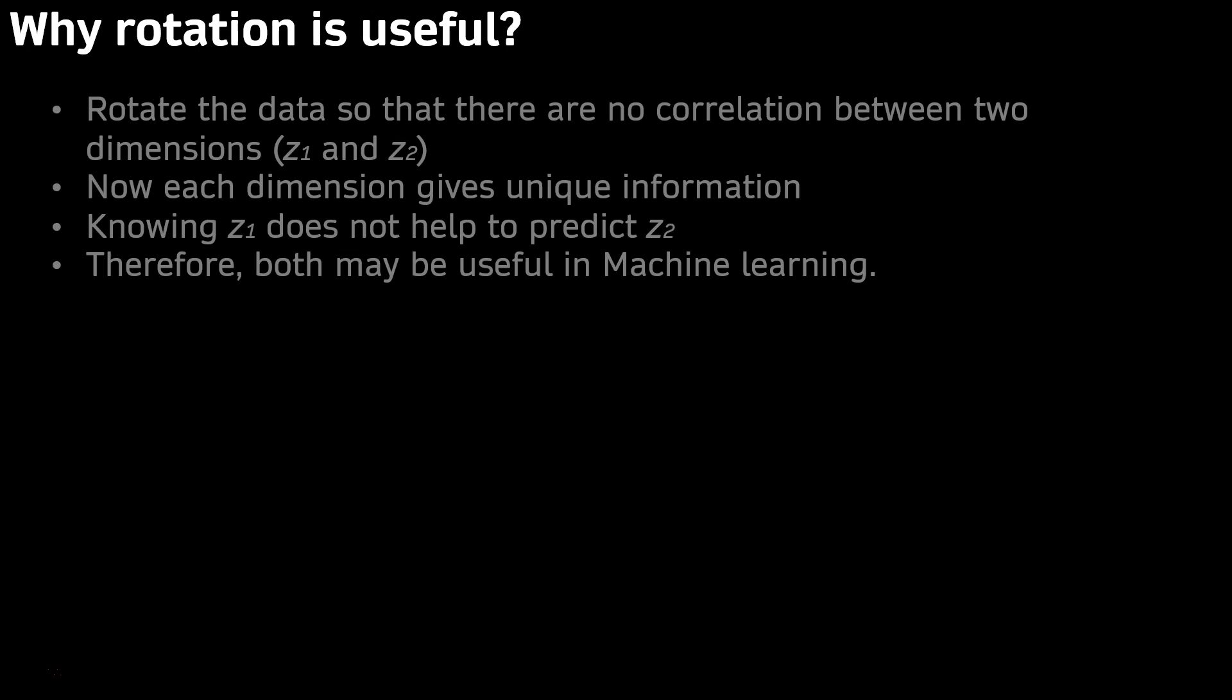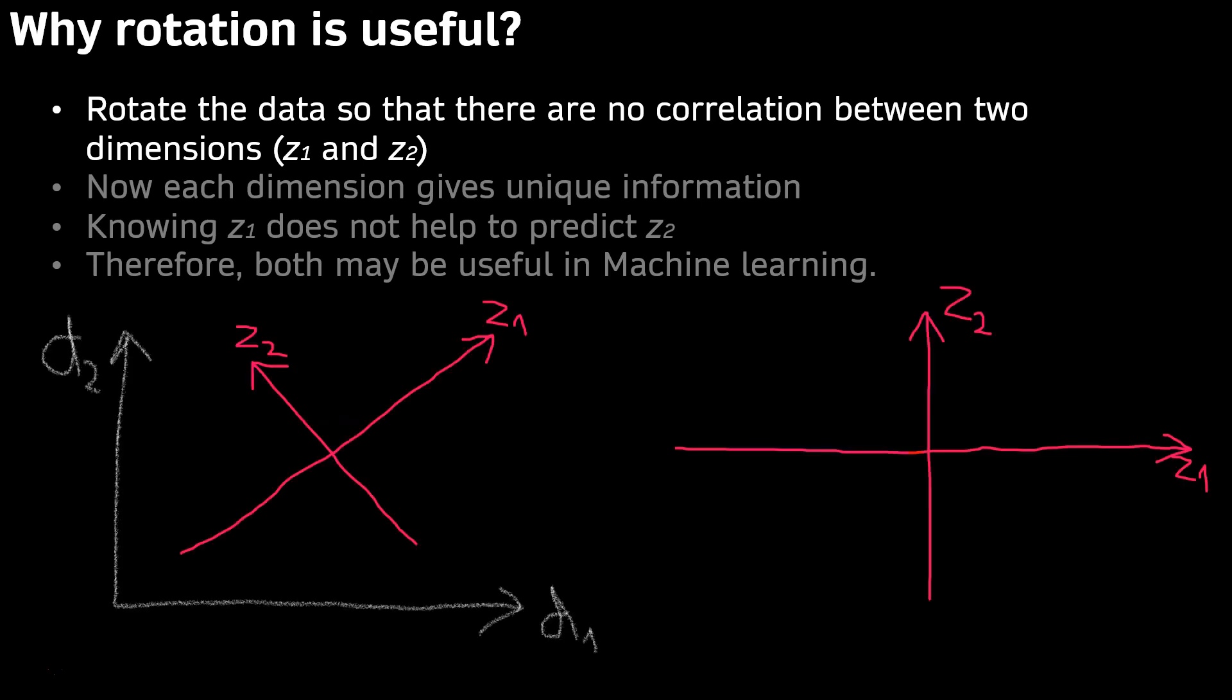The second topic on PCA is rotation, because what PCA exactly does with the data is making rotation. Why is rotation useful? PCA rotates the data so that there is no correlation between two dimensions. Let's call the dimensions Z1 and Z2.